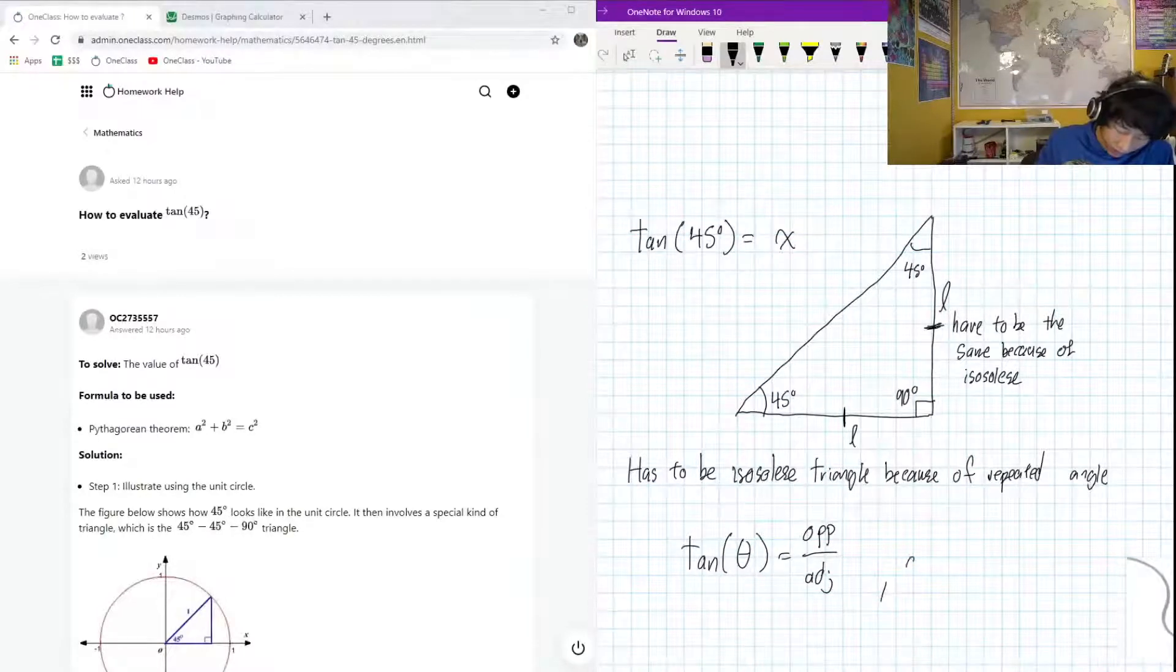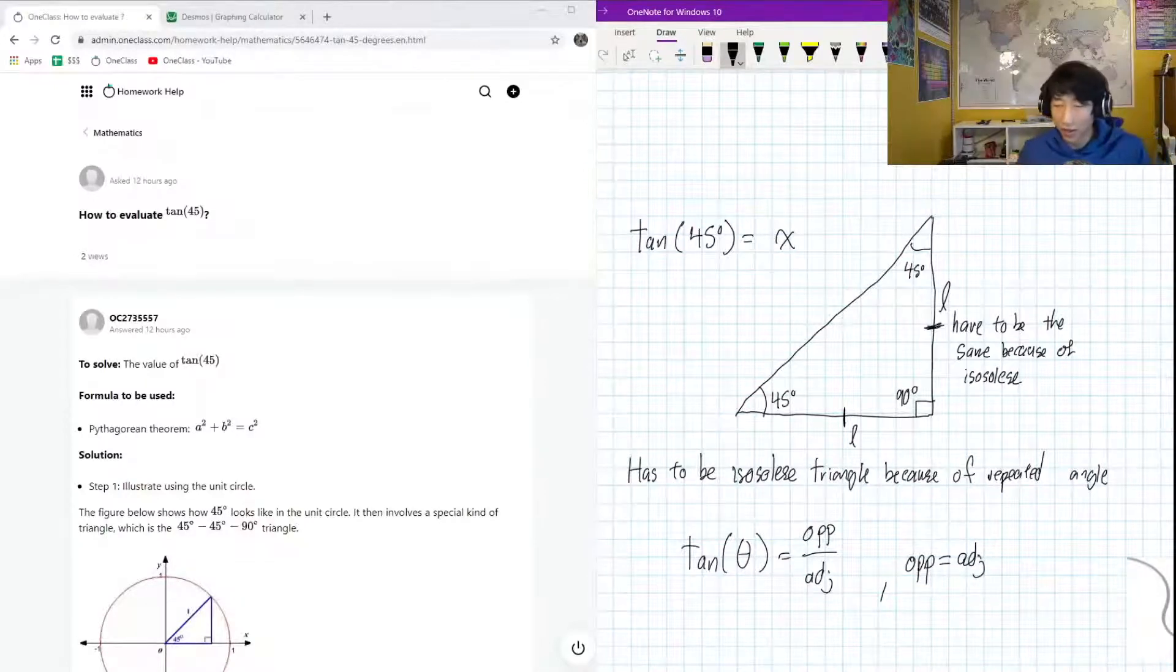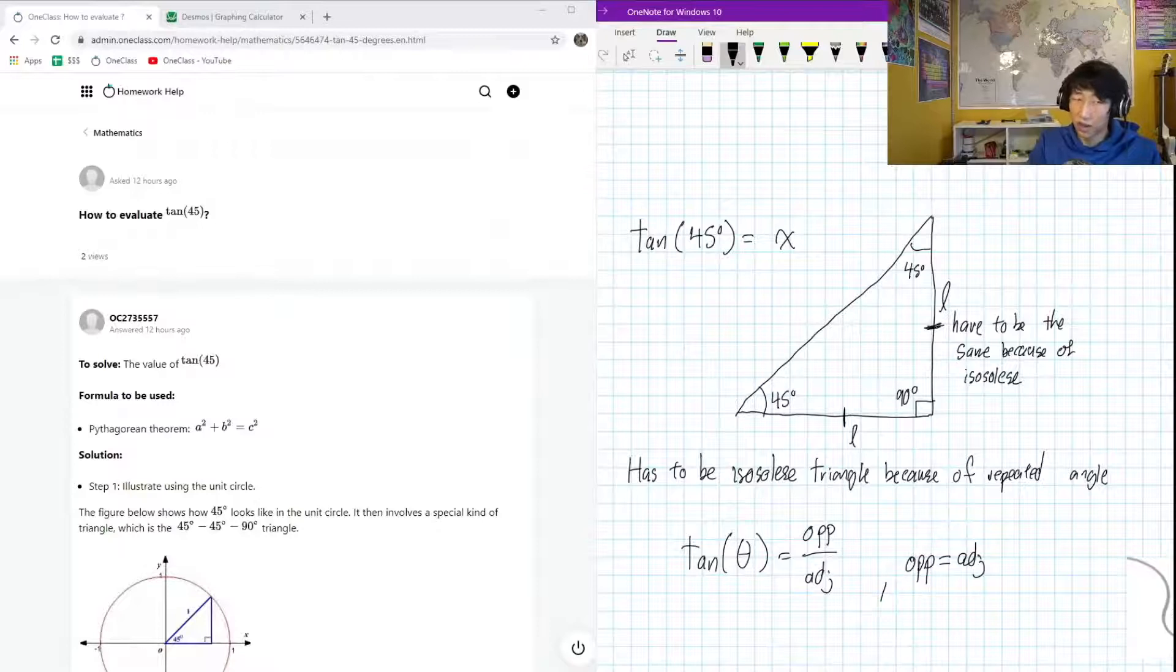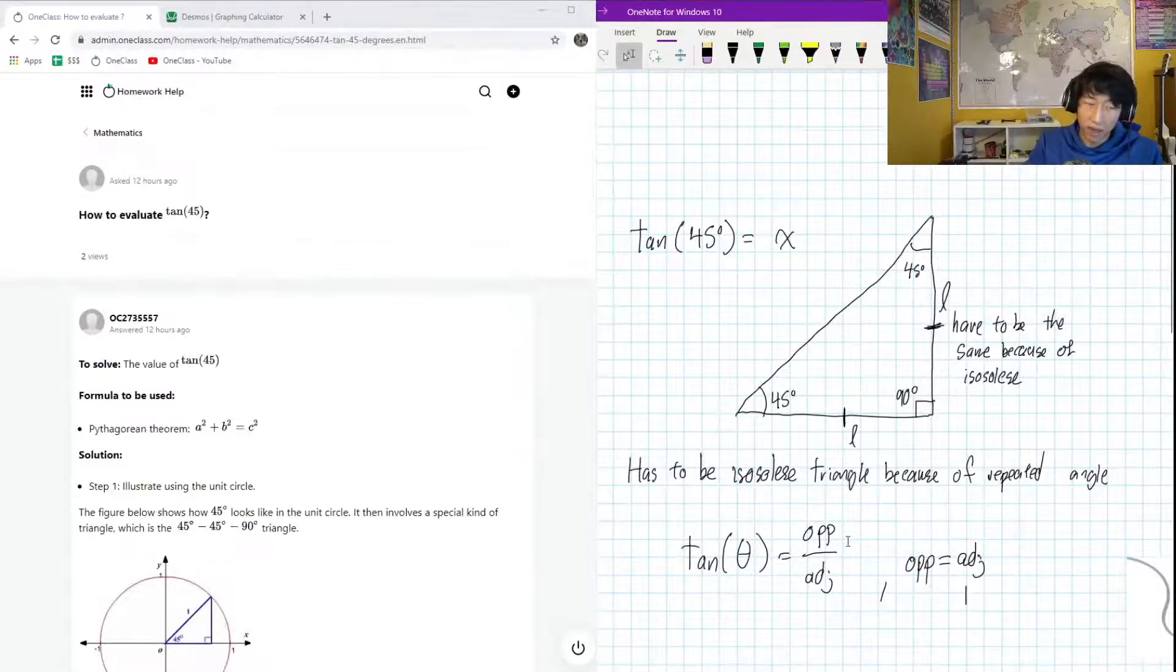But we also know that opposite has to be equal to adjacent. And that has to be the case, otherwise this is not going to be an isosceles triangle, and it has to be an isosceles triangle because of that 45 degree angle.